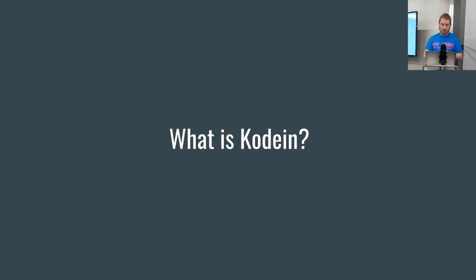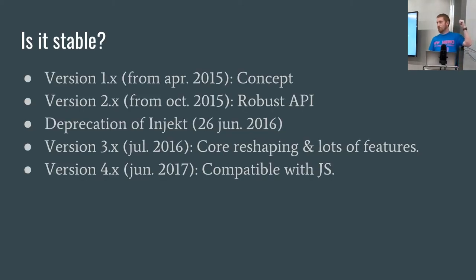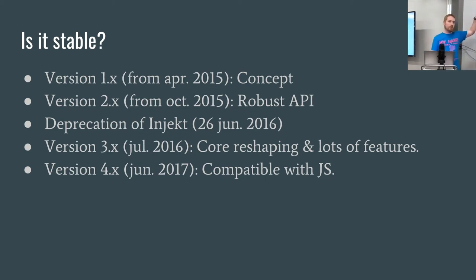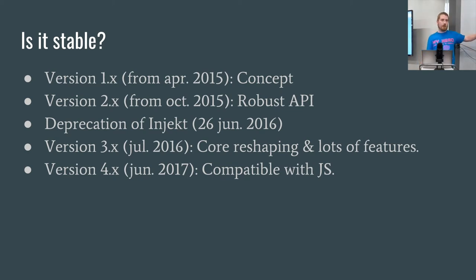So what is Kodein? By its own definition, Kodein is a very simple and yet very useful dependency retrieval container — very easy to use and configure. It started in 2015, around when Kotlin became mainstream, and is now at version four, where the author perceives the framework to be complete. Starting to use it now means it's unlikely to significantly change going forward. We're past the hard parts, so now's a good time to jump in.